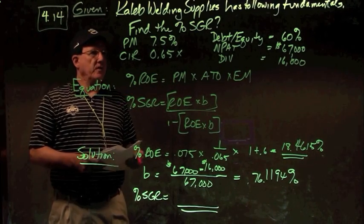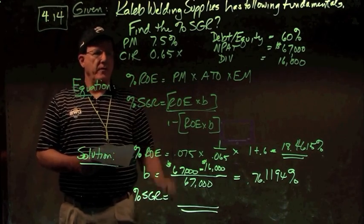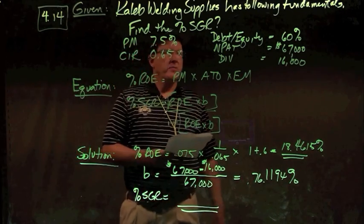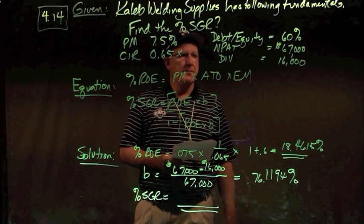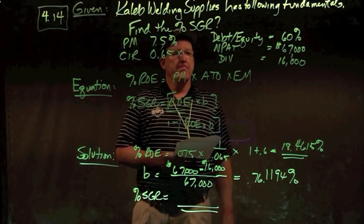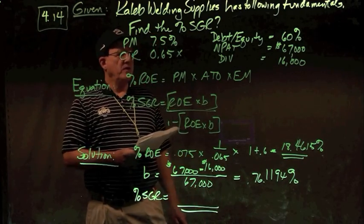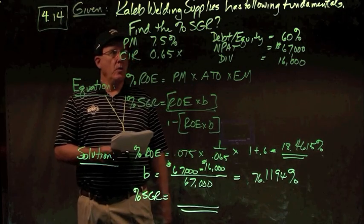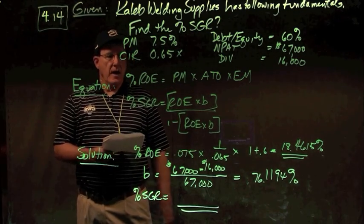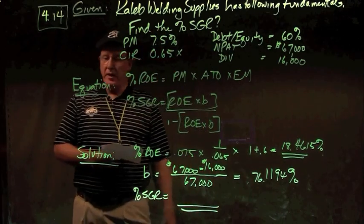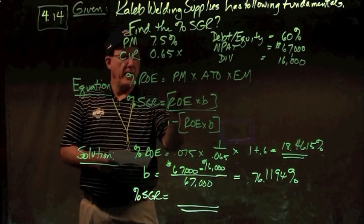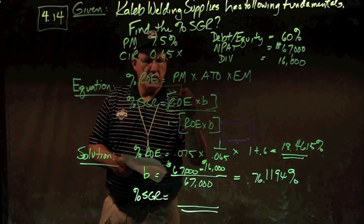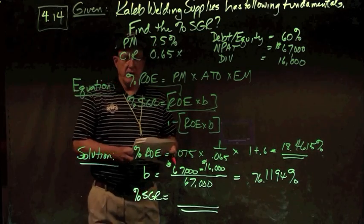In problem number 14, Caleb's Welding Supplies has the following fundamentals: Profit margin of 7.5%, capital intensity ratio of 0.65, debt-to-equity 60% or 0.60 times NPAT of 67,000, and dividend of 16,000 paid out. They want to know what is the sustainable growth rate. SGR is ROE times B over 1 minus ROE times B, and to calculate the ROE, I need profit margin times asset turnover times equity multiplier. So I need to find ROE first, and then I can find B, and then I can calculate the SGR.